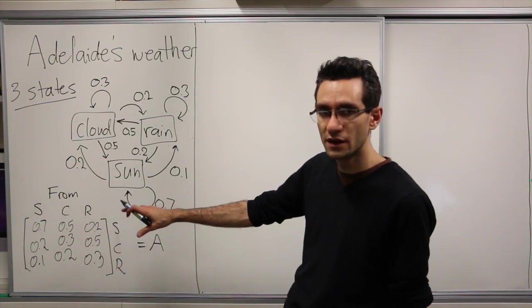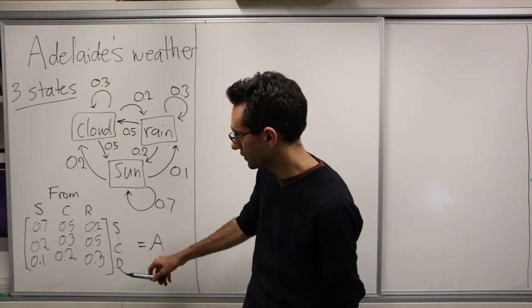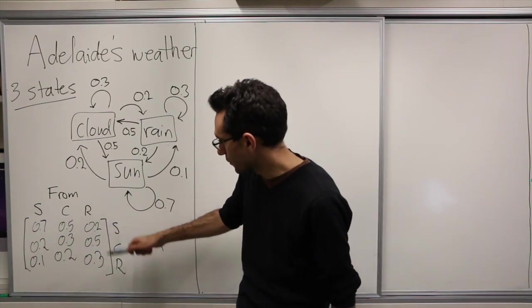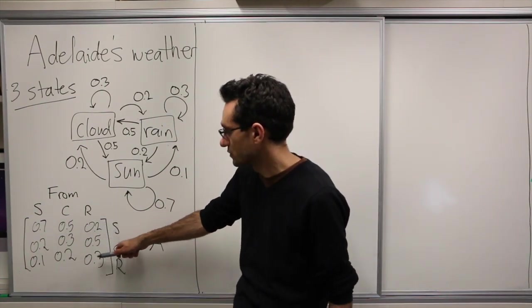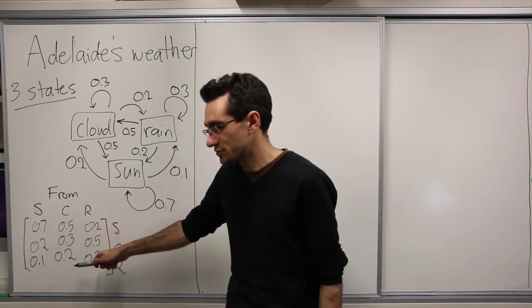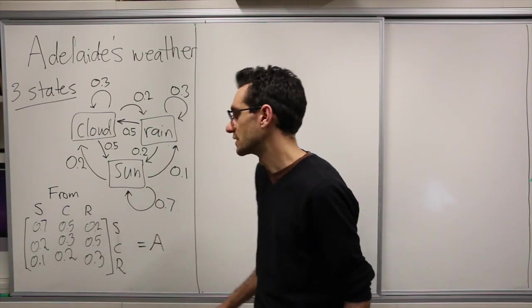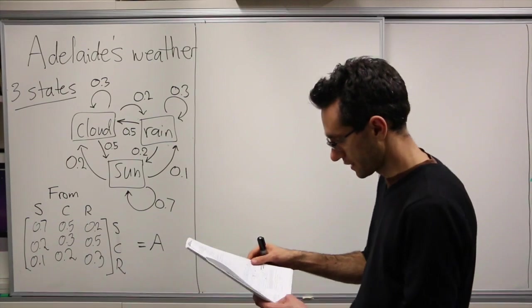Okay, so now we have our transition matrix. We can check all the probabilities add up to 1: 0.2, 0.5, 0.3 add up to 1, and again the columns all add up to 1. So this is our matrix.